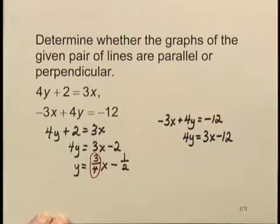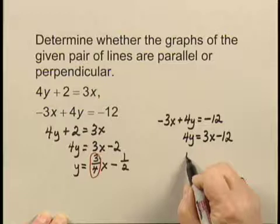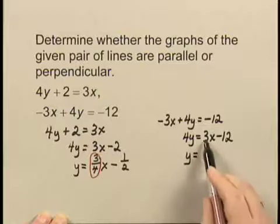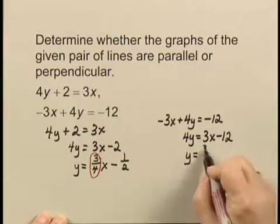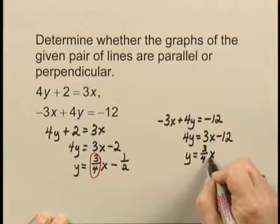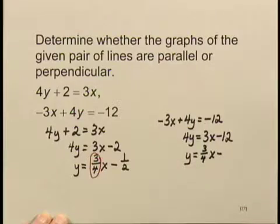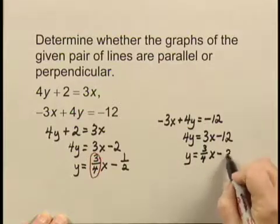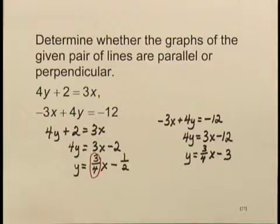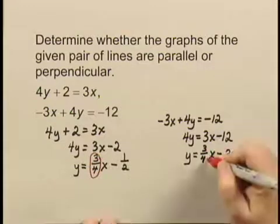And again, I divide everything by 4 to solve for y. That gives me y equals 3 fourths x minus 3. And the slope is again 3 fourths.